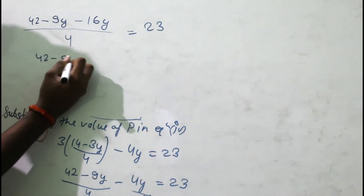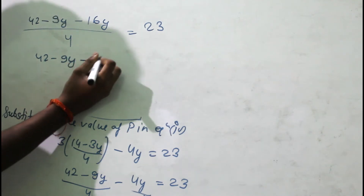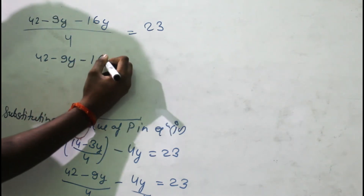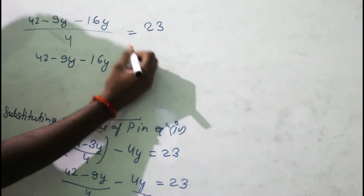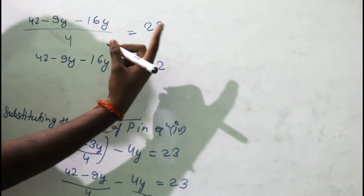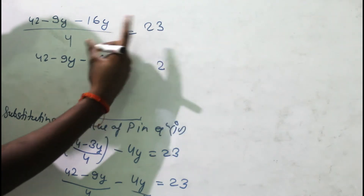Multiplying both sides by 4: 42 - 9y - 16y = 4 × 23 = 92. Combining the y terms: 42 - 25y = 92.